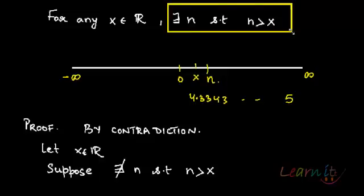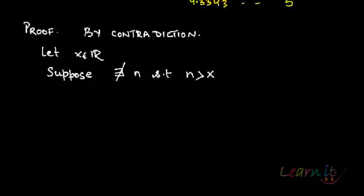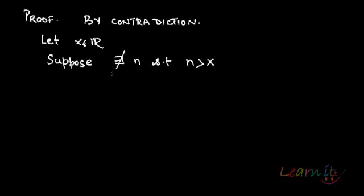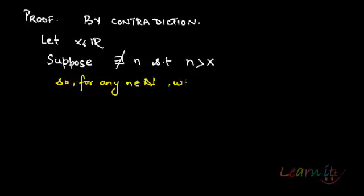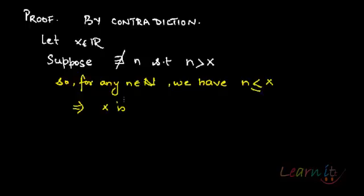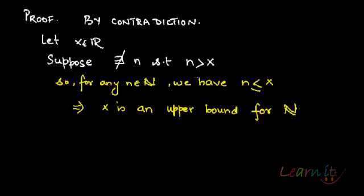That is the negation of the property. So this would mean that for any natural number n, n is less than or equal to x. If it is not greater than x, then it is less than or equal to x. So what does it mean? It means that x is an upper bound for ℕ, because all the natural numbers are less than or equal to x.